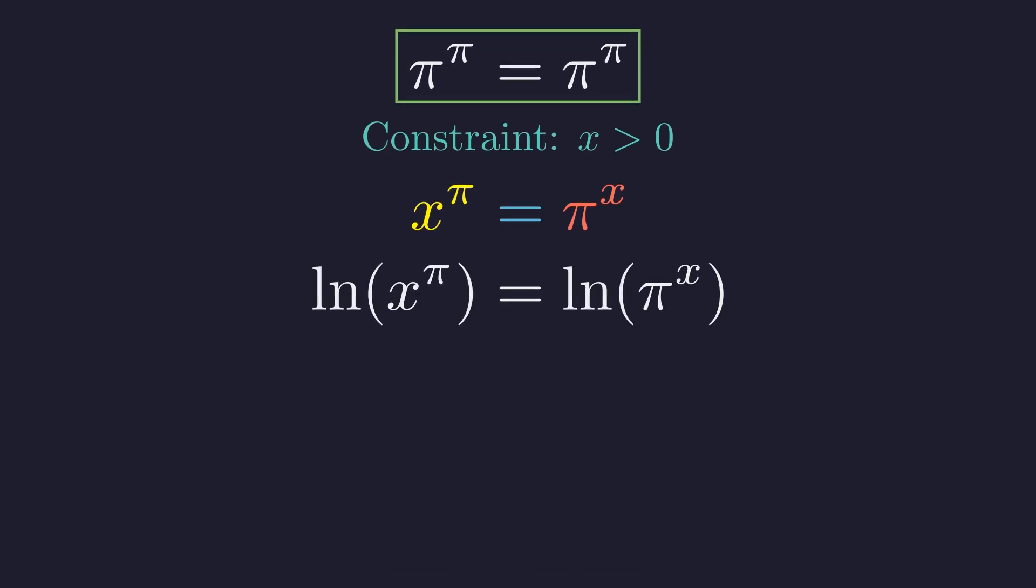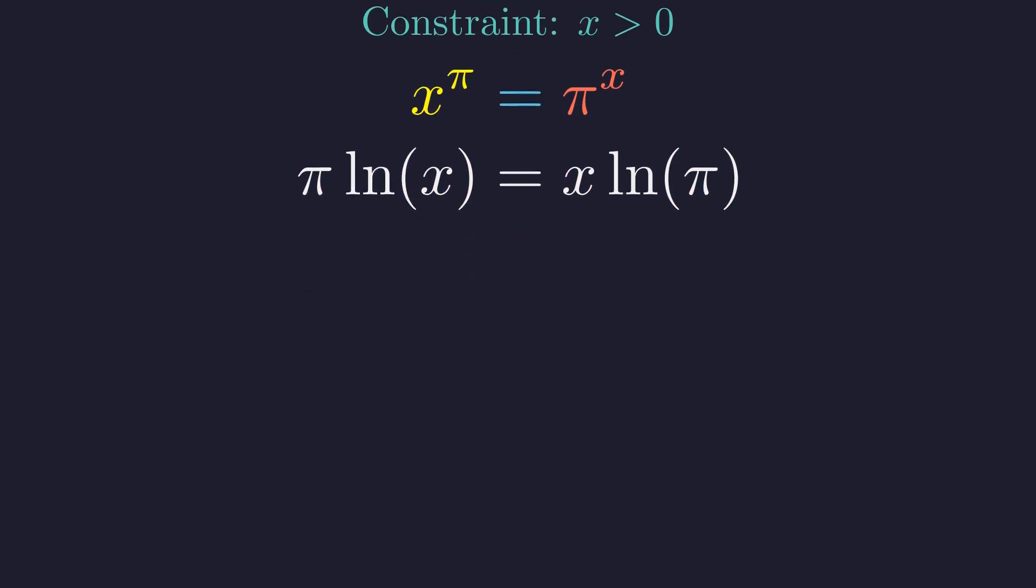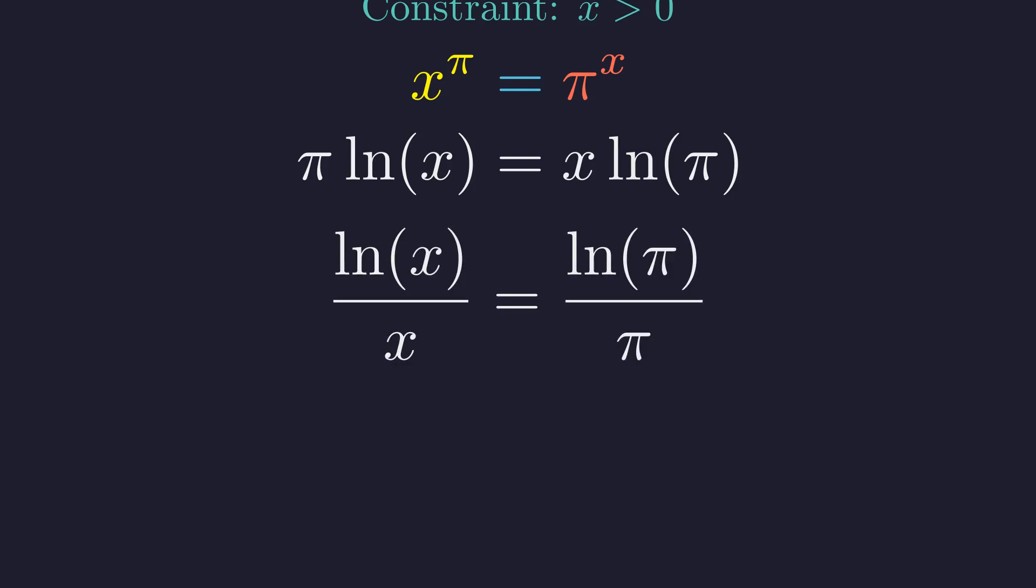Let's take the natural log of both sides. Using the power rule of logarithms, the exponents come down front. Now we have π times the natural log of x equals x times the natural log of π. Let's rearrange this to isolate terms with x. Dividing both sides appropriately, we get the natural log of x over x equals the natural log of π over π.